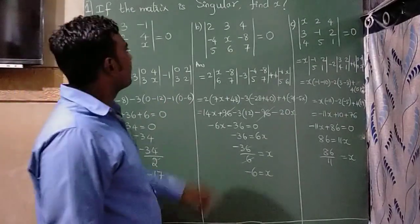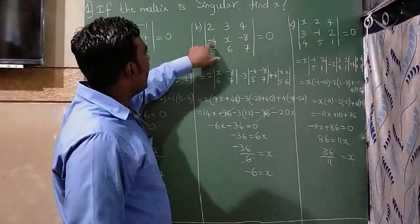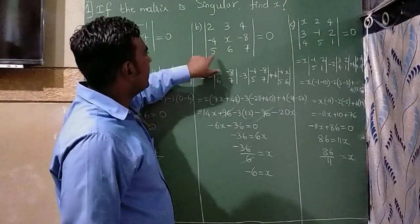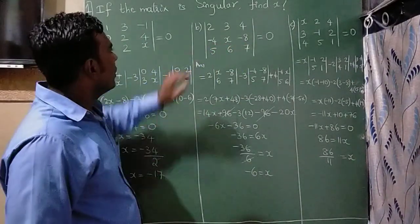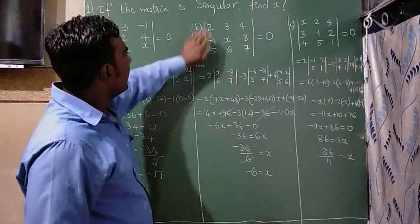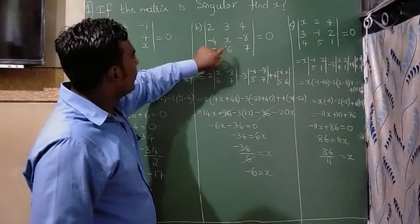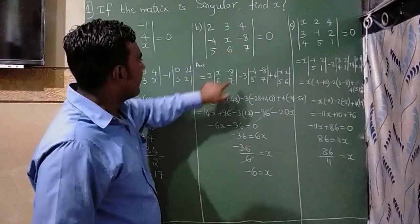Let us move on to the second sum. It is matrix 2, 3, 4, -4, x, -8, 5, 6, 7 equals 0. The first number is 2 here. If I close this column, you can see x, -8, 6, 7 I have written here.